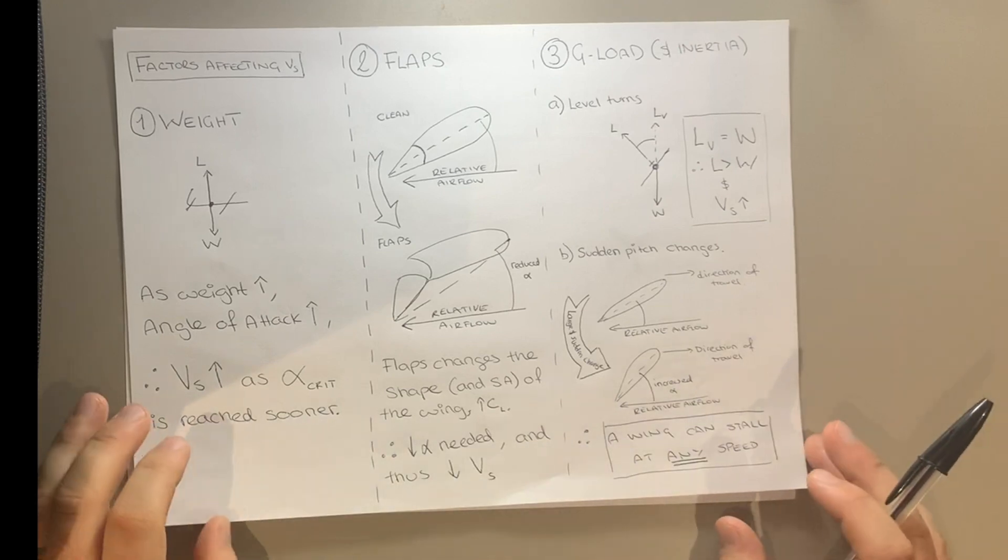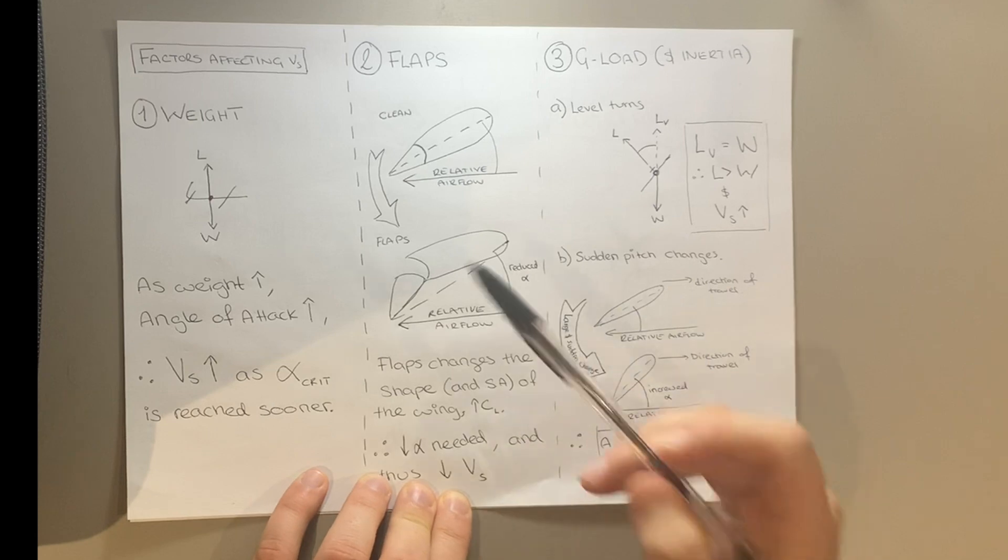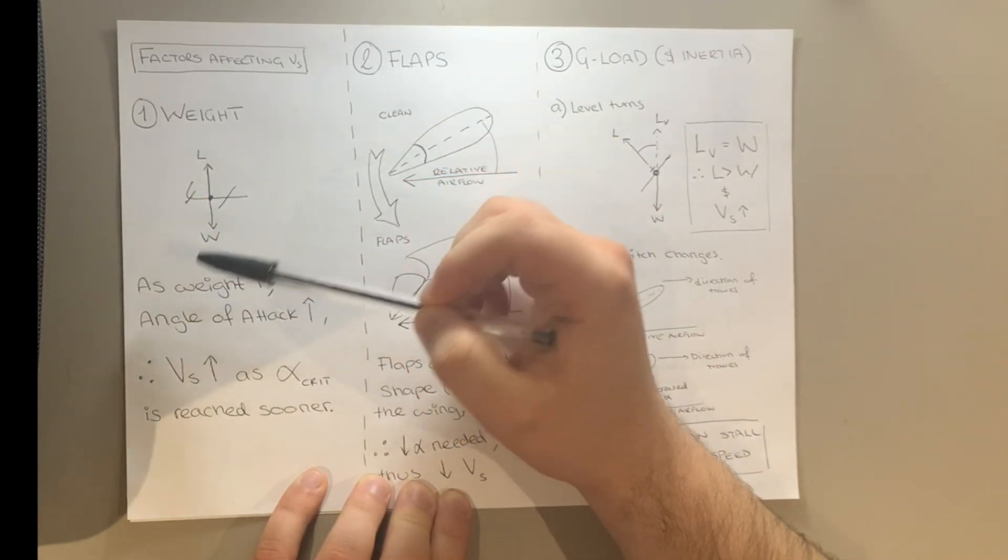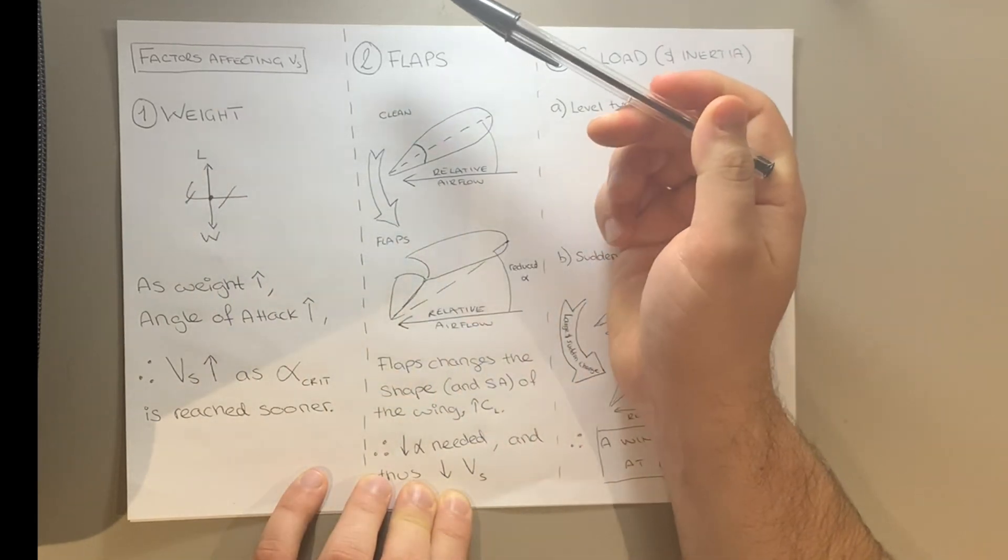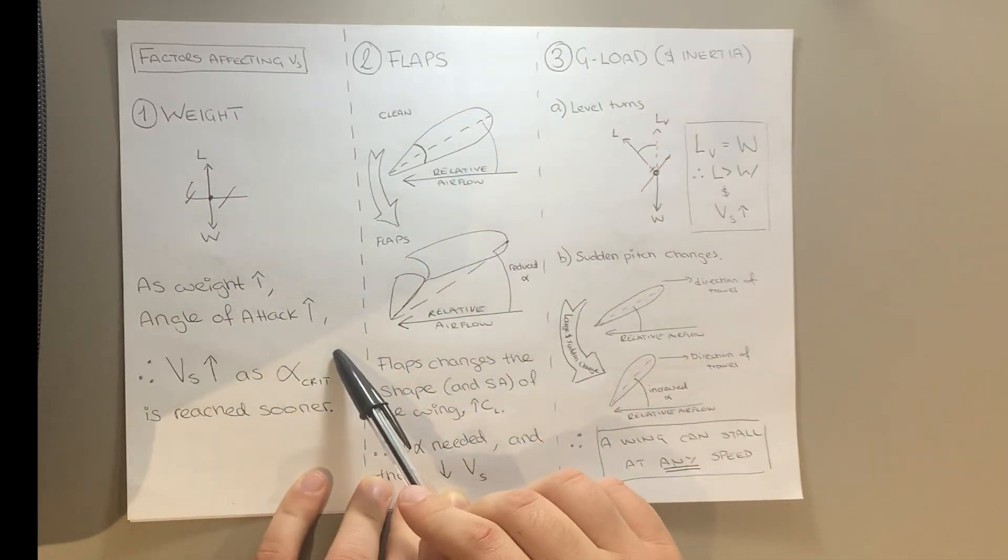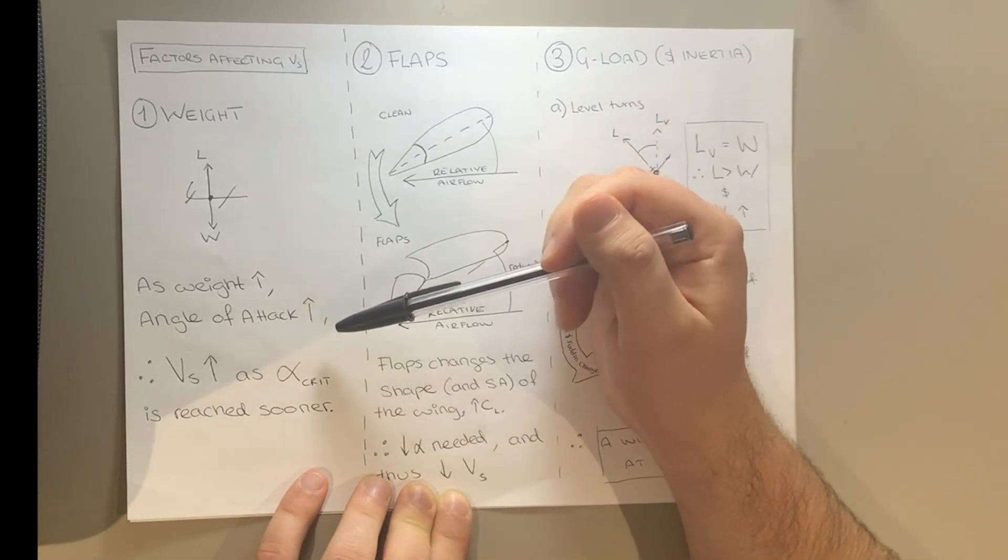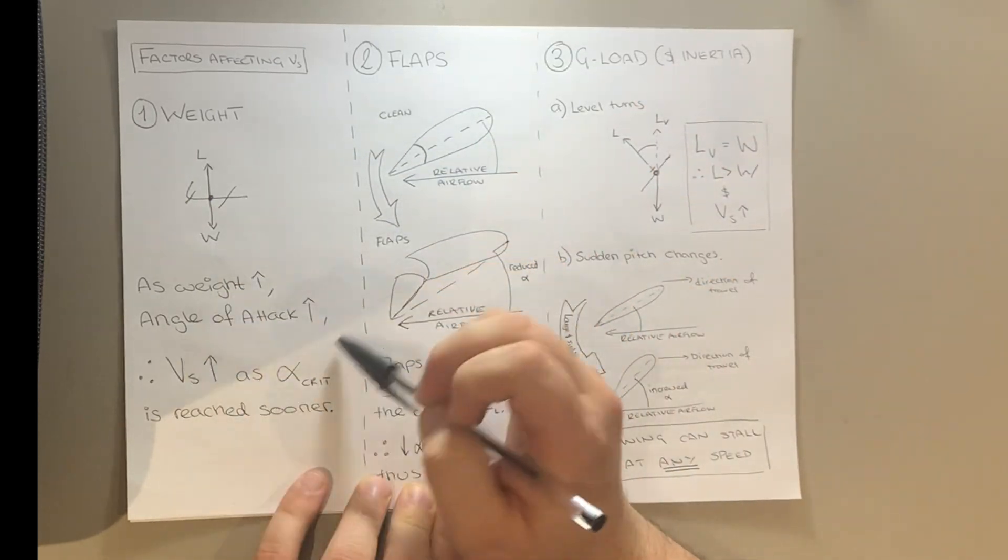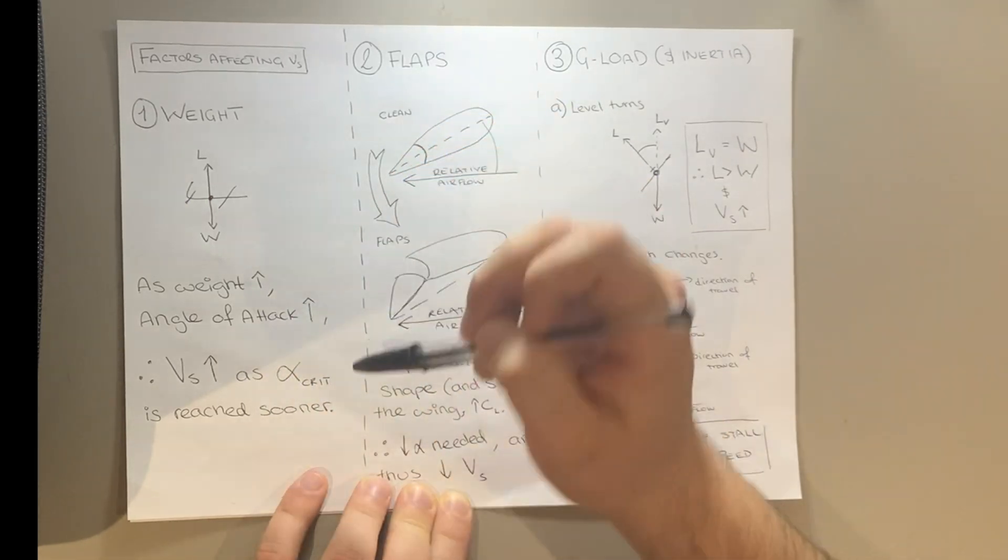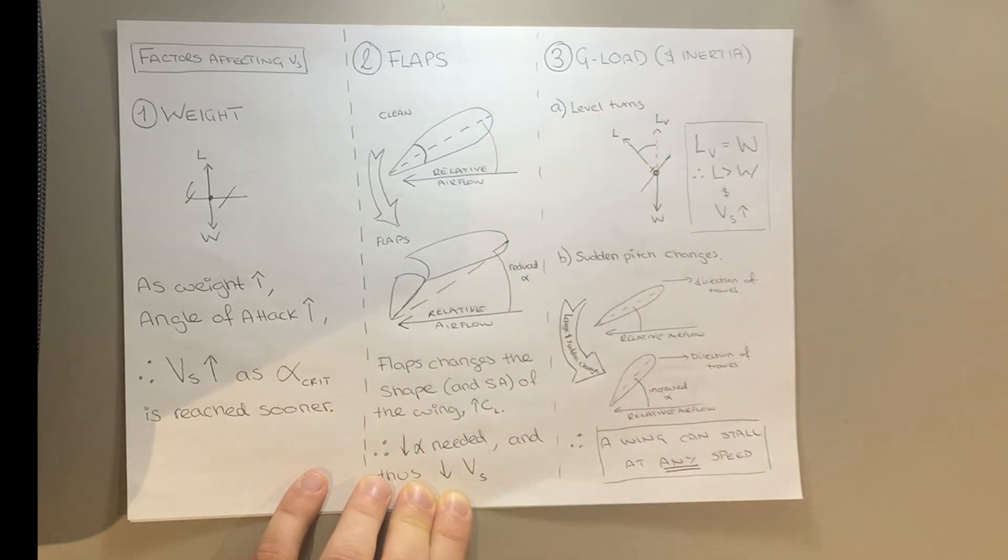We're not looking at all of them, but just these three main factors. First of all, is weight. Nice and obvious. If we need lift equals to weight, and weight increases, we need to increase lift. If you're not speeding up, you're going to need a higher angle of attack. Therefore, as we slow down, we'll need to increase the angle of attack more and more. But if you start at a higher angle of attack to begin with, you're going to reach critical angle of attack a lot sooner, therefore at a higher speed. So as weight increases, the stall speed is increased as it's reached sooner.